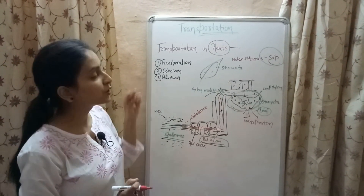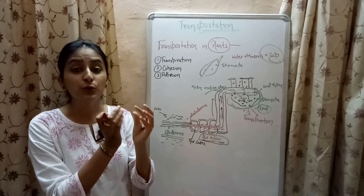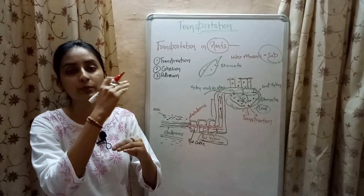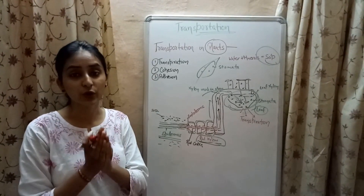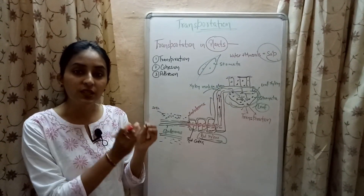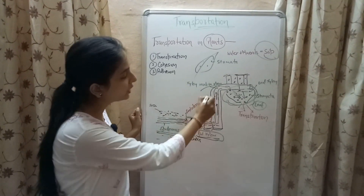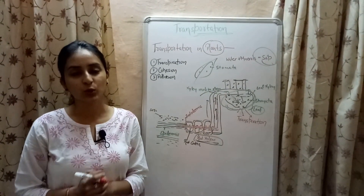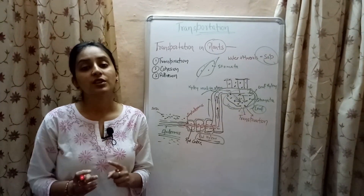To allow continuous flow of water and minerals in the upward direction, cohesion and adhesion are also responsible. Cohesion refers to the force of attraction between water molecules, which prevents breakage between molecules during the conduction process. Adhesion is the force of attraction between water molecules and the xylem vessels, which allows continuous flow of water and minerals from the roots to the stem and leaf parts. This is how water and minerals get transported in plants.